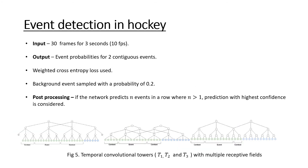For event detection in hockey, the input consists of 30 frames for a period of 3 seconds at 10 fps. The events are input such that each tower receives frames corresponding to two events and the context around each event as input — this is illustrated here, where this is the event and this is the context around it. Each tower processes two contiguous events in a single pass so that the transition between two events can also be learned. Weighted cross-entropy loss is used, and the background event is sampled with a probability of 0.2, because if we do not do this, only the background will be sampled and learning will become difficult.